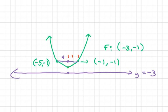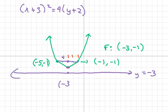Our standard form is x plus 3 squared equals 4 times y plus 2, and our vertex is negative 3 comma negative 2.